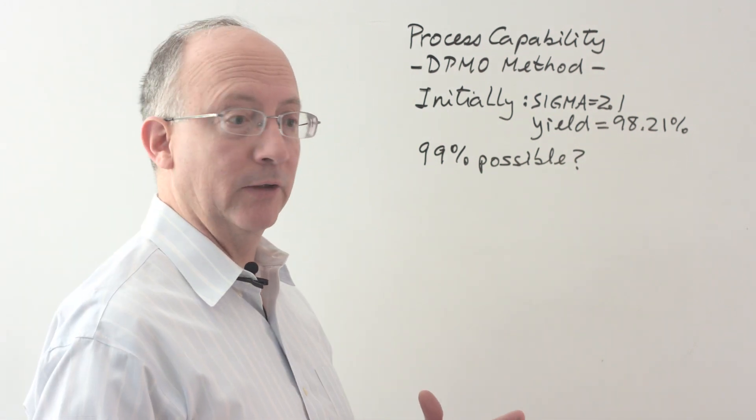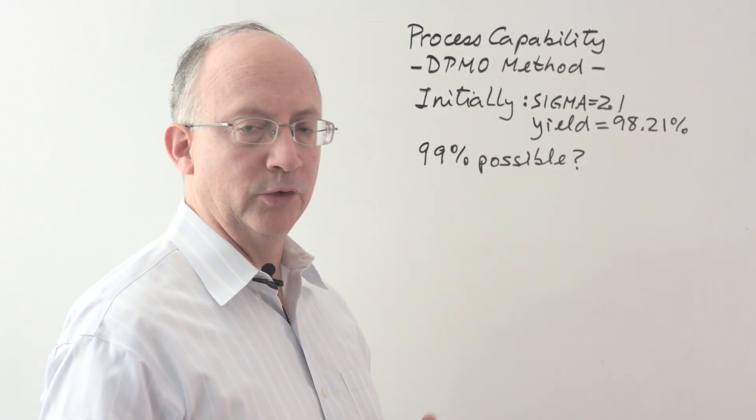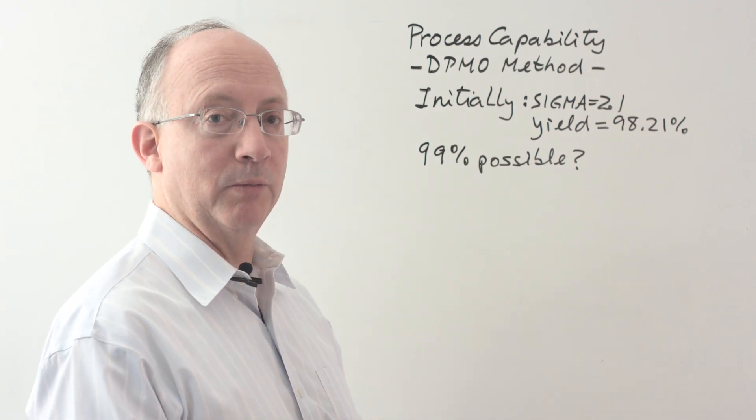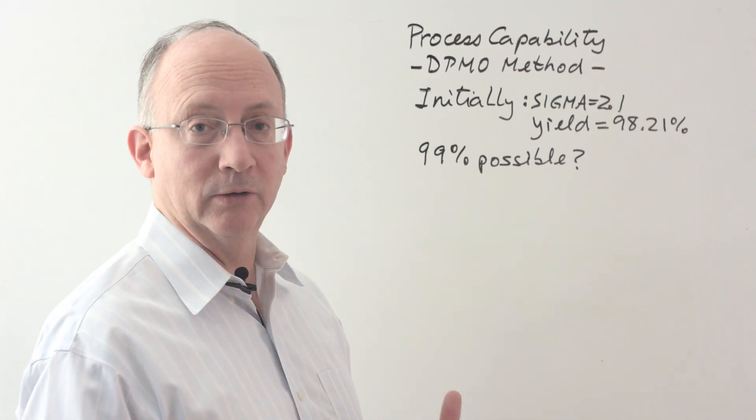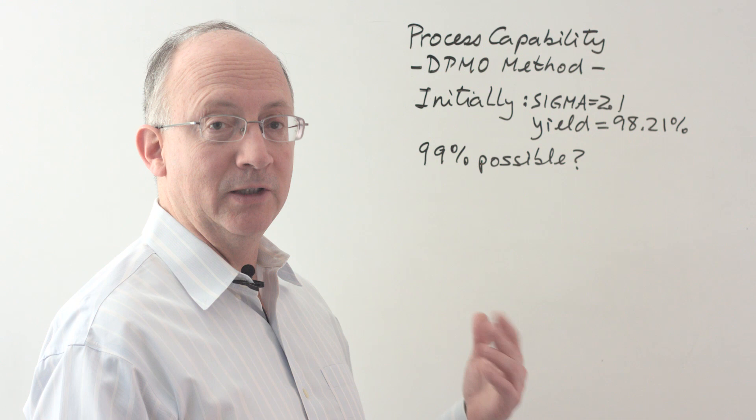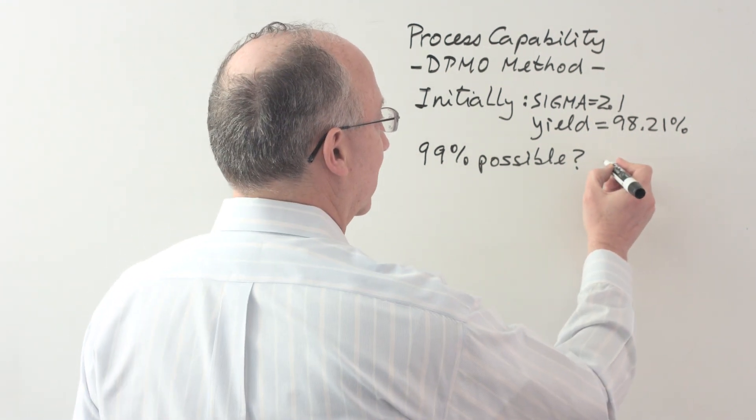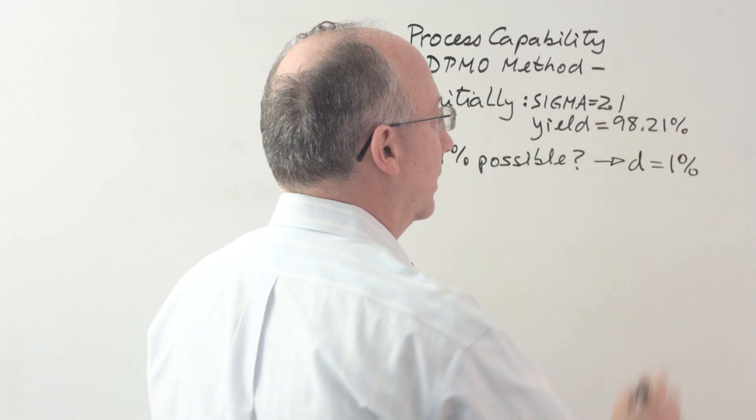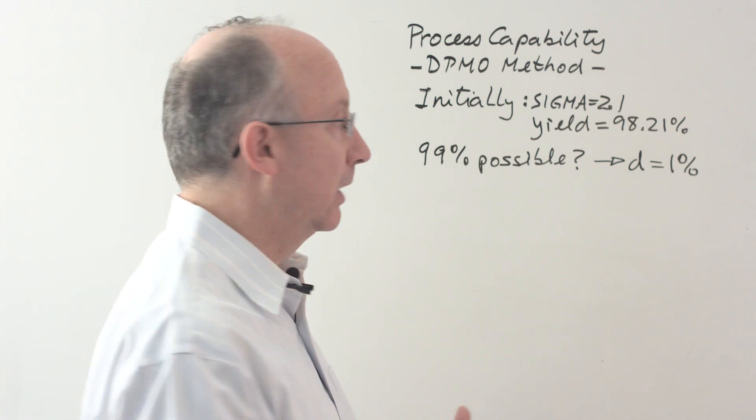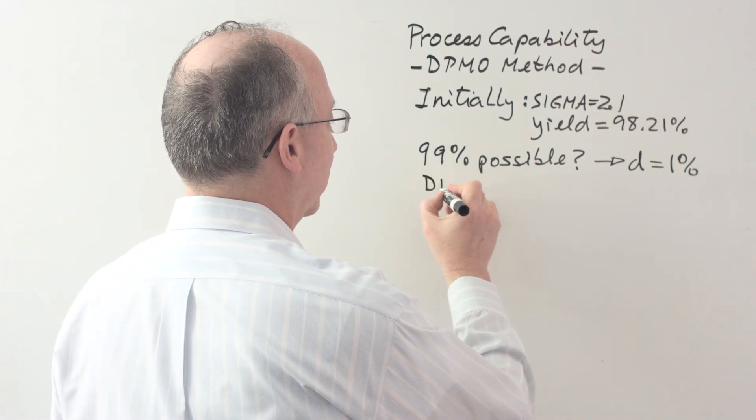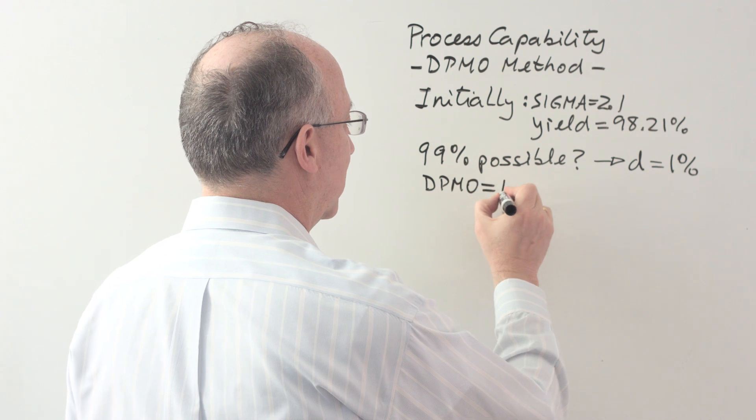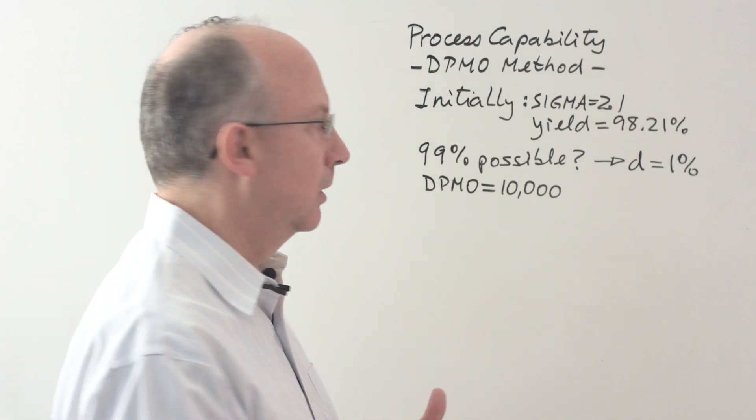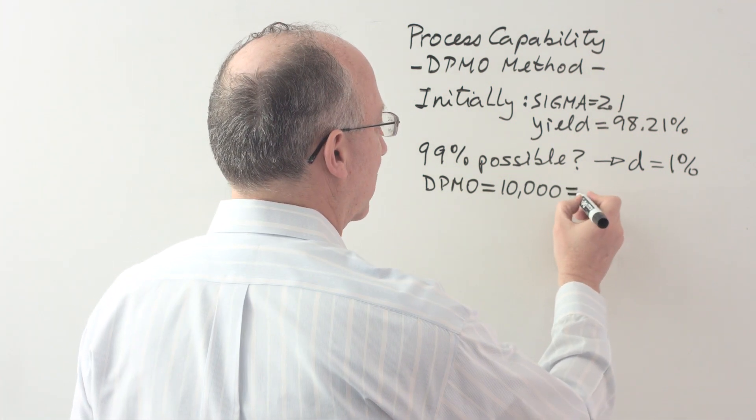Is 99% possible? The constraint that we're giving ourselves is that we're not going to try to change the timeliness or the speed of delivery. Let's just work on the completeness. Can we reduce the number of incomplete orders in order to get to this? Let's take a look at how the calculation would go. 99% yield means that the percent defective is going to be 1%. Now, 1% expressed as parts per million is the same as saying that what we want is a DPMO equal to 10,000.